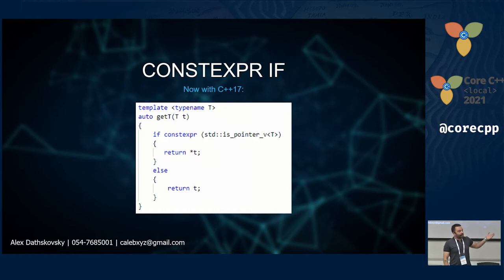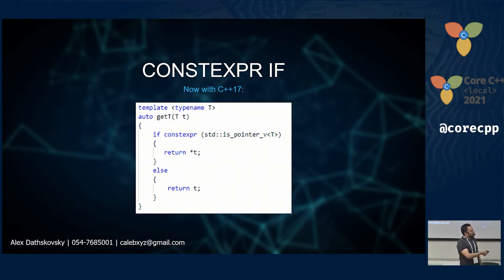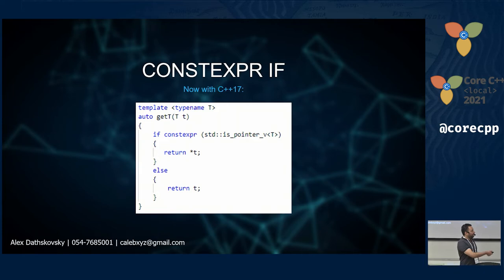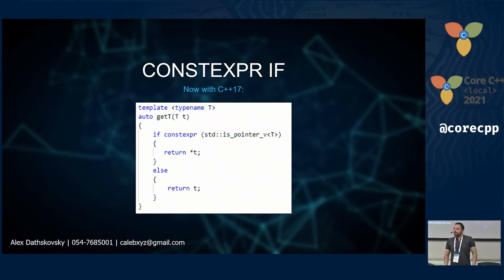The answer from C++17 is constexpr if. You use constexpr inside the if itself, and at compile time you tell the compiler: if the template type parameter is a pointer, make this function return a reference to the pointer, and the else branch is cut out at compile time. So the compiler always knows exactly what you want from it.